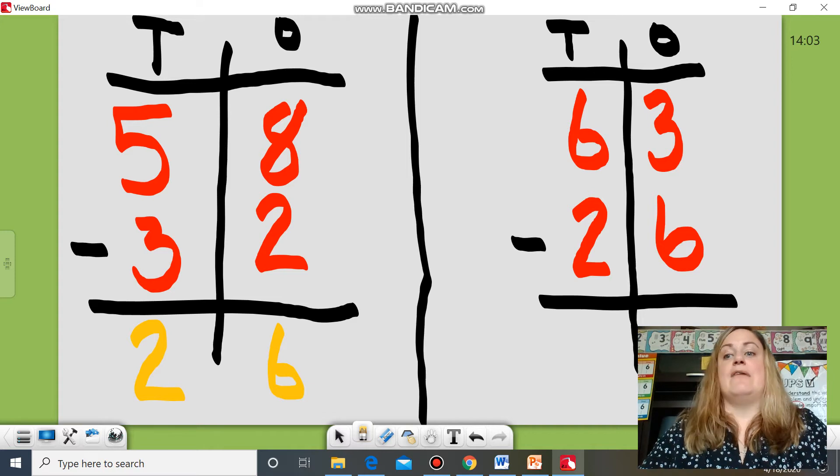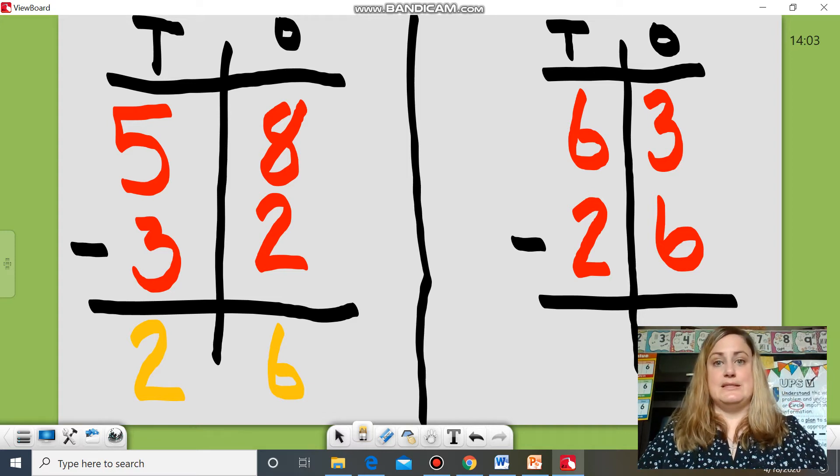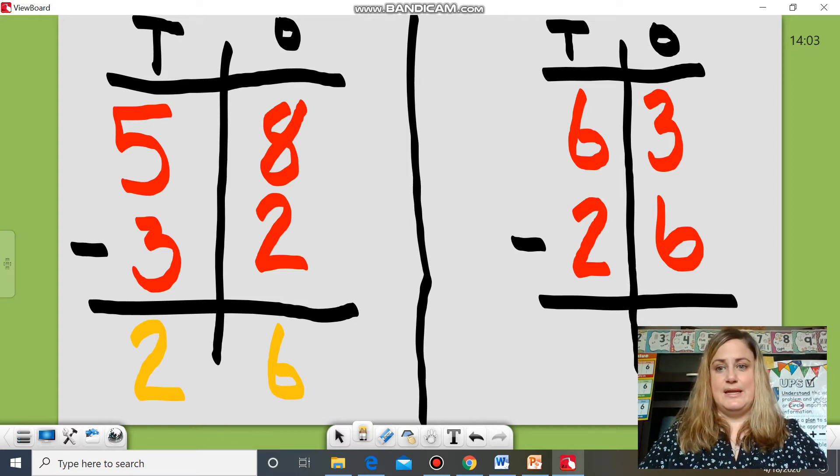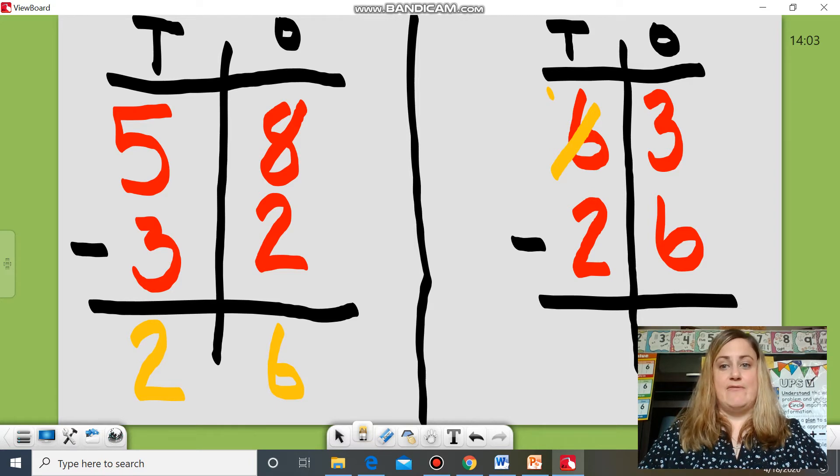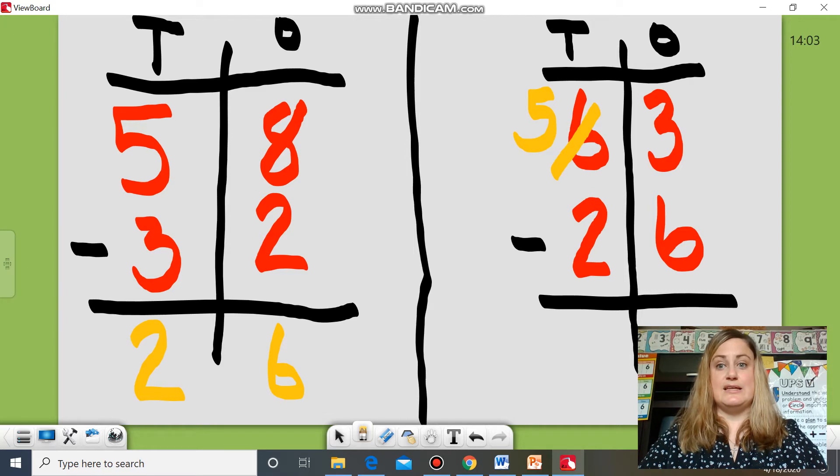So now what do I have to do? I have to go next door and get ten more. What does that mean? That means that I'm going to cross off my six and I'm going to take a ten away. Remember the six is in the tens place. So if I take one from six, I have five left.